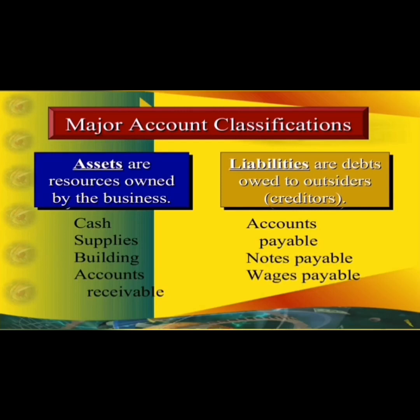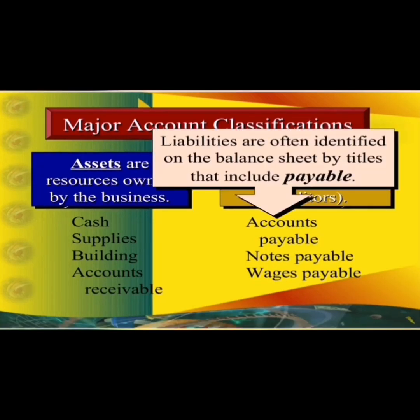Next, major account classifications: on the left side of your scheme are assets, and on the right side are liabilities. Assets are resources owned by the business. A few examples from the assets side: cash, supplies, building, and accounts receivable. A few examples from liabilities: accounts payable, notes payable, and wages payable. Liabilities are often identified on the balance sheet by titles that include the word 'payable.'